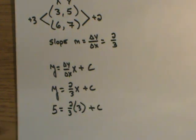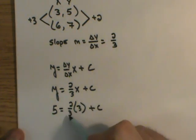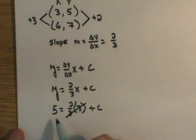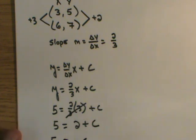As I solve this, I notice that the 3's can cancel out here. And so I have 5 is equal to 2 plus c. I move my 2 over. I can go 5 minus 2 is equal to c. So 3 is equal to c.